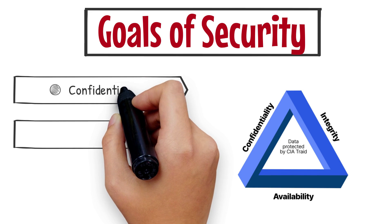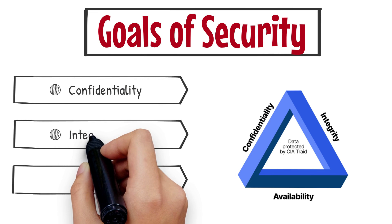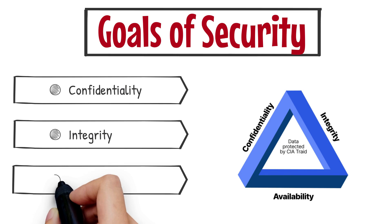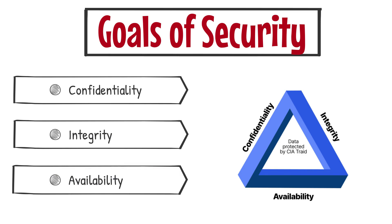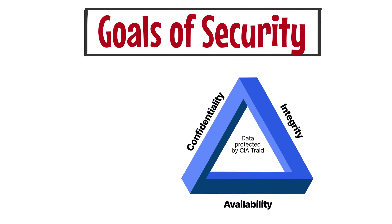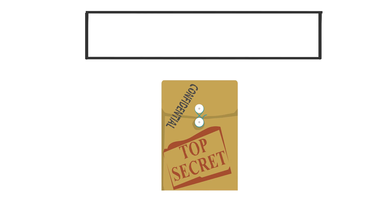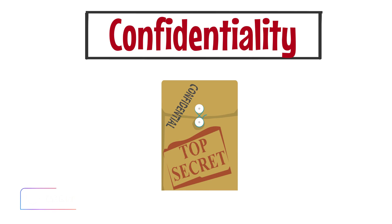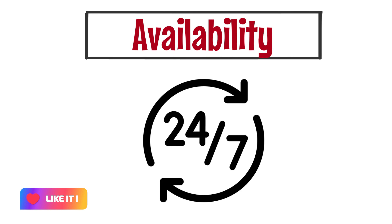In today's digital age, it's more important than ever to understand the key objectives of protecting sensitive information and assets. In this video, we will discuss the three main goals of security: confidentiality, integrity, and availability, and provide examples to help illustrate each one.